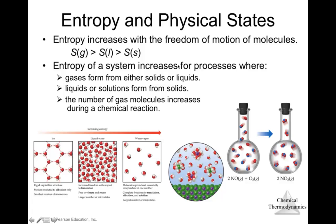The entropy of a system increases for processes where gases form from either solids or liquids. Going from solid to gas or liquid to gas increases entropy. Entropy also increases when liquids or solutions form from solids — for example, when a solid melts to produce a liquid. Additionally, if the number of gas molecules increases during a chemical reaction, this also increases the entropy of the system.